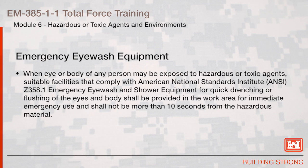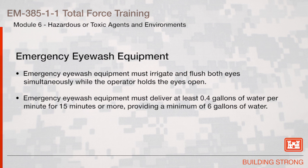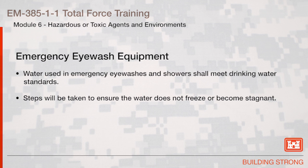When the eye or body of any person may be exposed to hazardous or toxic agents, suitable facilities that comply with American National Standards Institute, or ANSI, Z358.1, emergency eyewash and shower equipment, for quick drenching or flushing of the eyes and body, shall be provided in the work area for immediate emergency use and shall not be more than 10 seconds from the hazardous material. Emergency eyewash equipment must irrigate and flush both eyes simultaneously while the operator holds the eyes open. Emergency eyewash equipment must deliver at least 0.4 gallons of water per minute for 15 minutes or more, providing a minimum of 6 gallons of water. Water used in emergency eyewashes and showers shall meet drinking water standards.